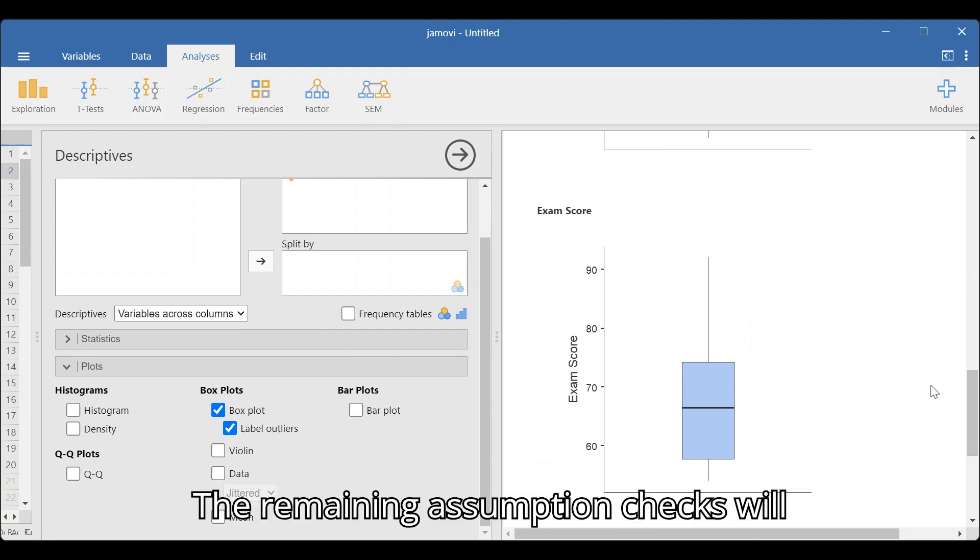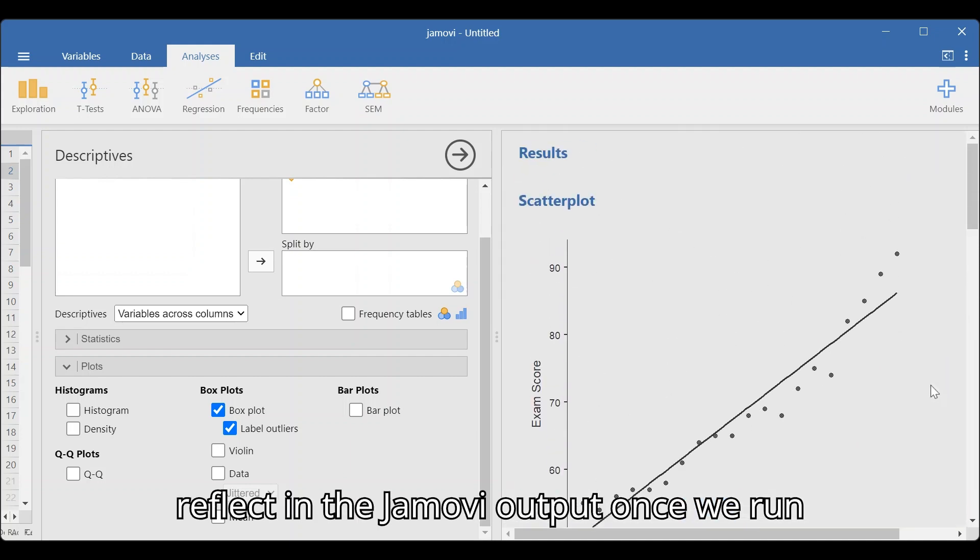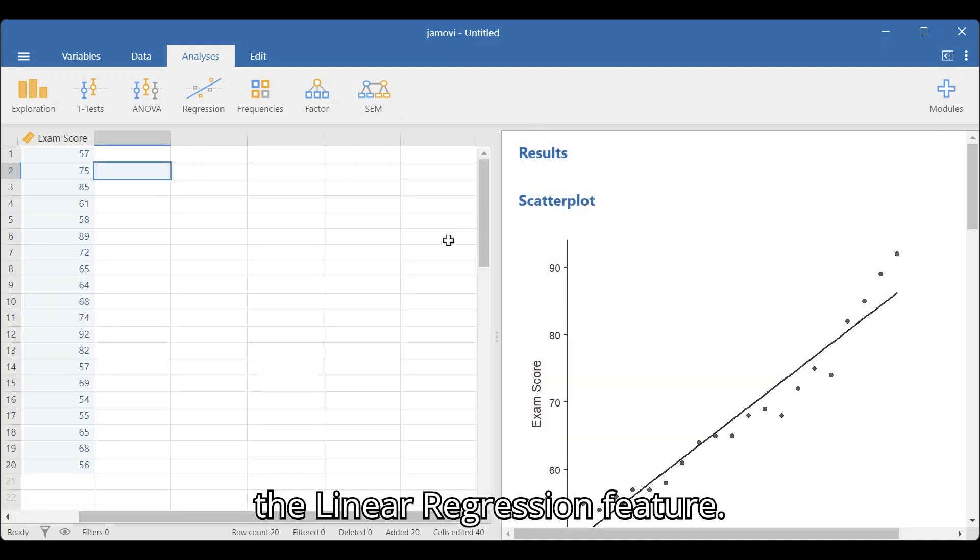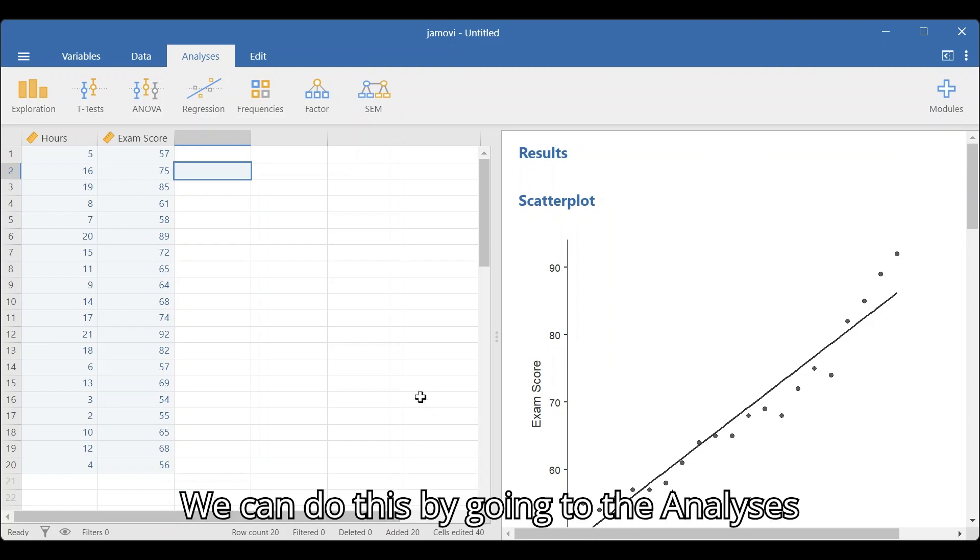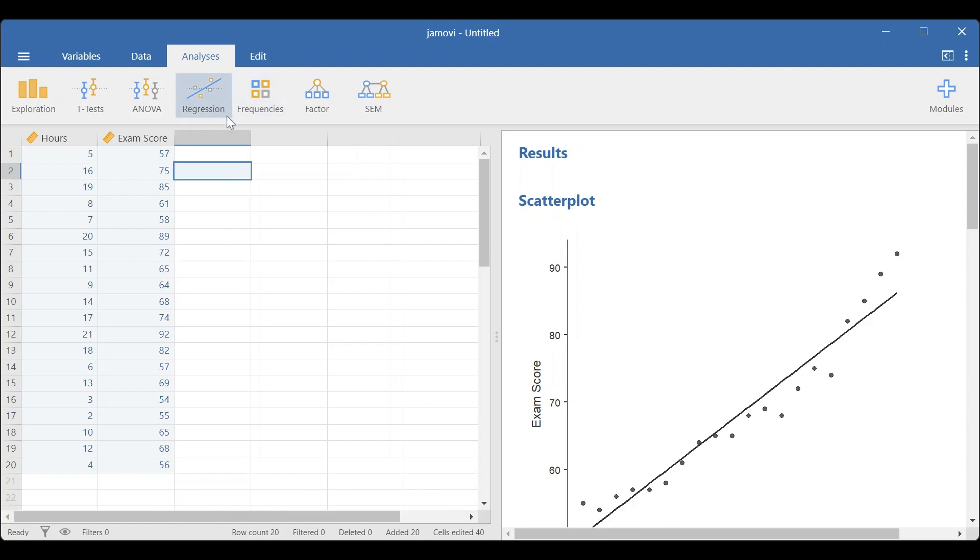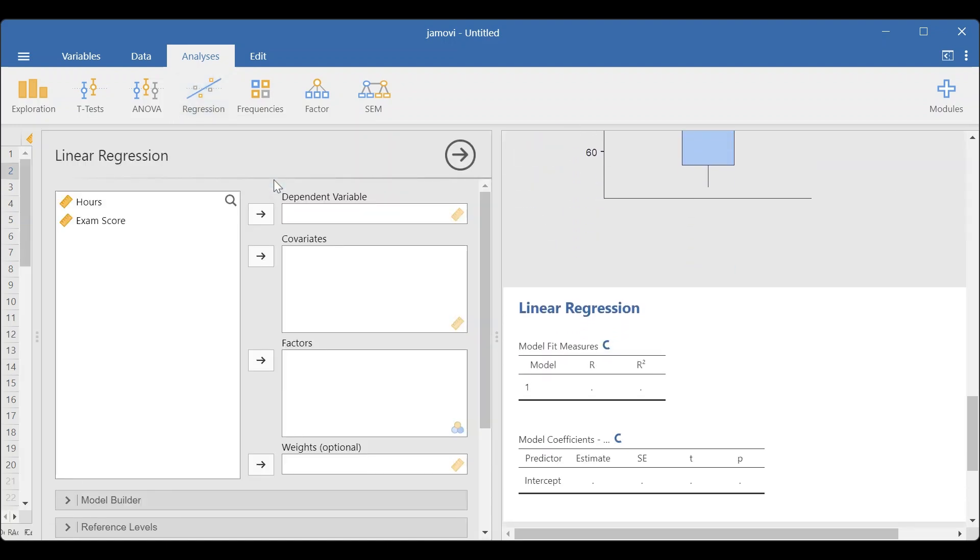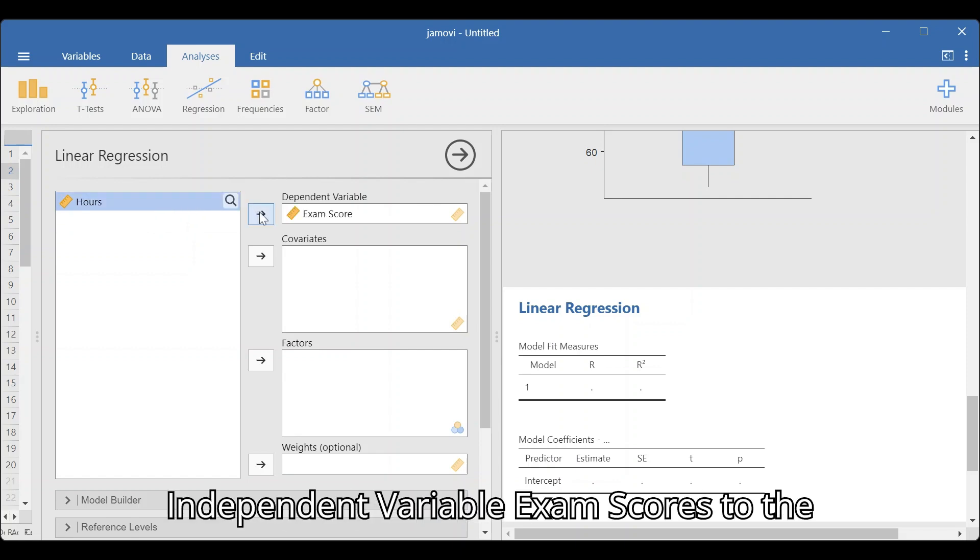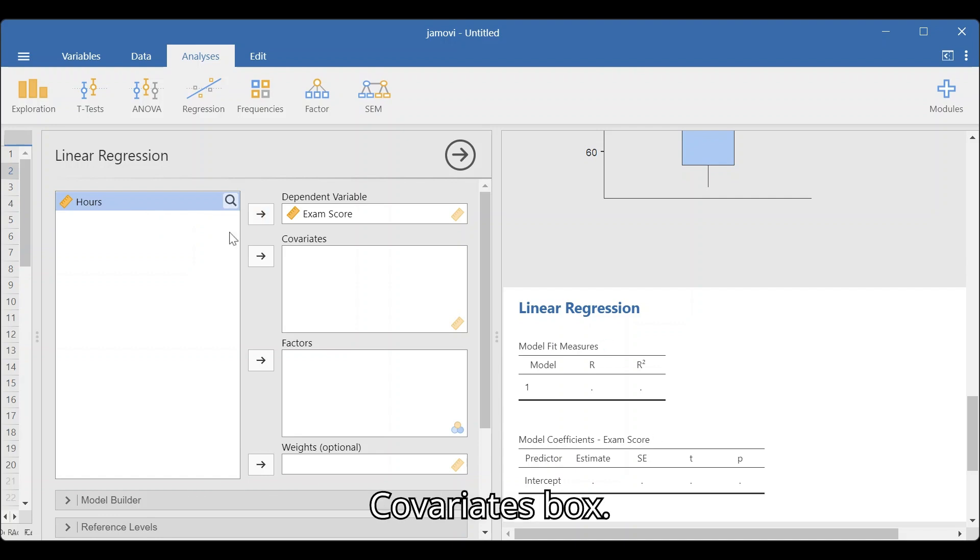The remaining assumption checks will reflect in the Jamovi output once we run the Linear Regression feature. We can do this by going to the Analyses menu, Regression, and Linear Regression. To start, move the Hours to the Dependent Variable box and the Independent Variable Exam Scores to the Covariates box.